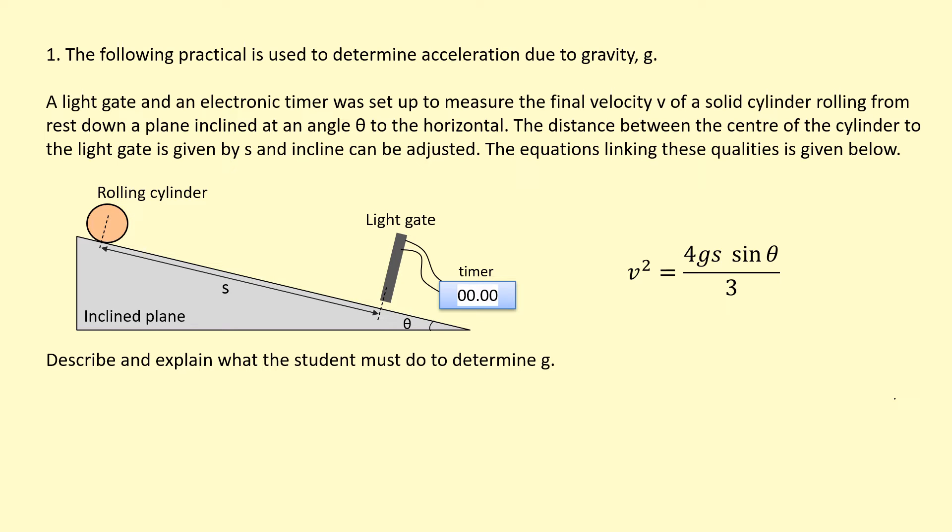In this video we're going to look at how to plan practicals that you haven't done before. This one is used to find acceleration due to gravity. You've got a cylinder on a slope and it's going to roll down. The distance between the cylinder and the light gate is S and it's inclined at some angle theta.